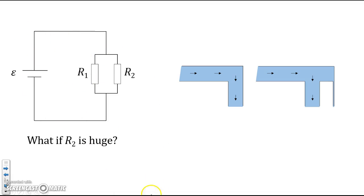The same is true for current. If R2 is huge, then hardly any current goes through it. So if R2 is huge, it's almost like it's not there. You basically haven't changed this circuit by adding that second resistor in parallel, just like you don't change the flow of water by adding this second pathway. It's no easier for water to flow, and the same is true of the charge.